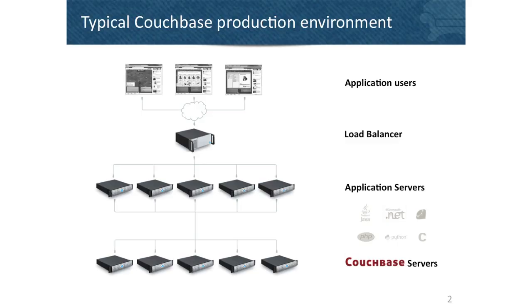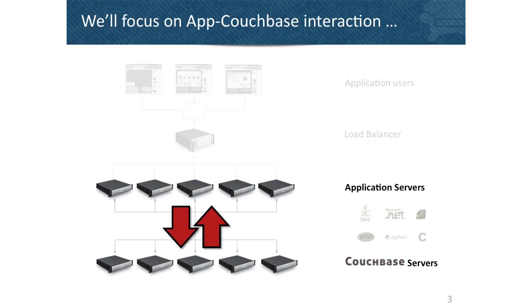Today I'd like to focus on some of the considerations it takes to really effectively run Couchbase in production. A typical production environment has application users accessing your application through a web browser or mobile device, hitting a load balancer that fans out to an application tier, which then accesses a Couchbase cluster underneath. We're going to focus on the interaction between these two layers — not so much from a development perspective, but what workload and production environments look like.